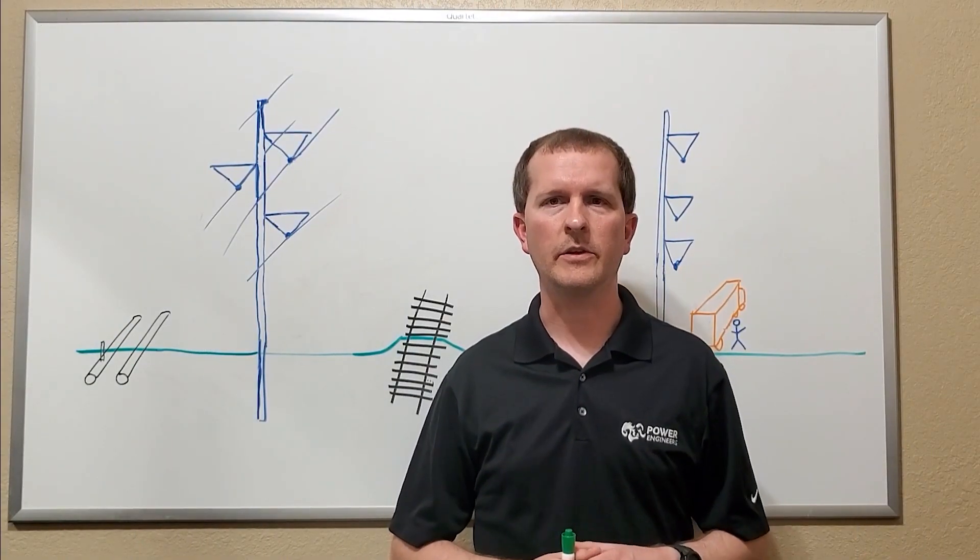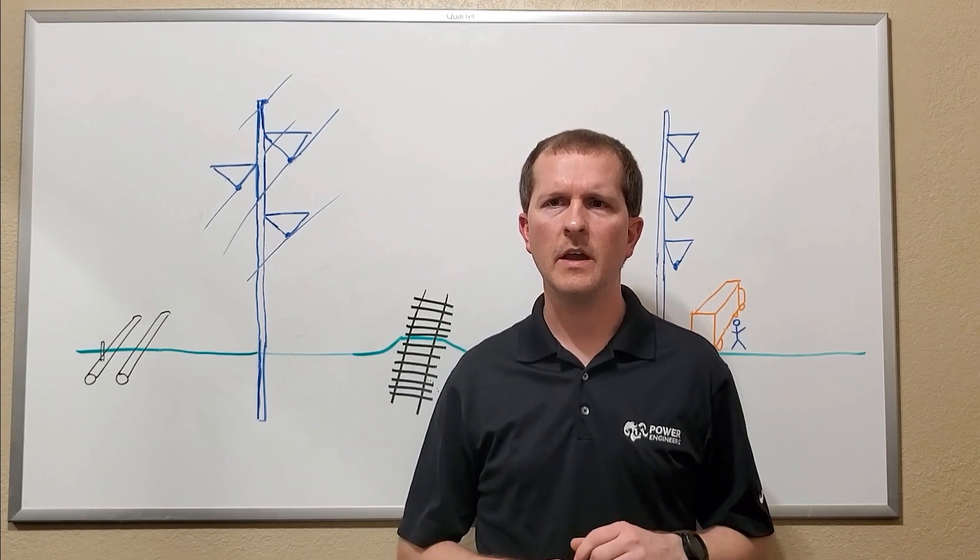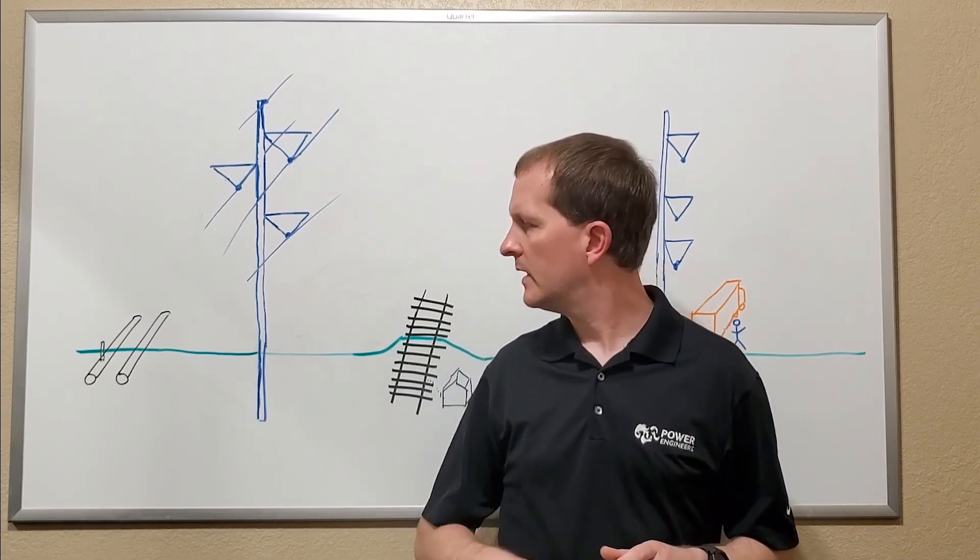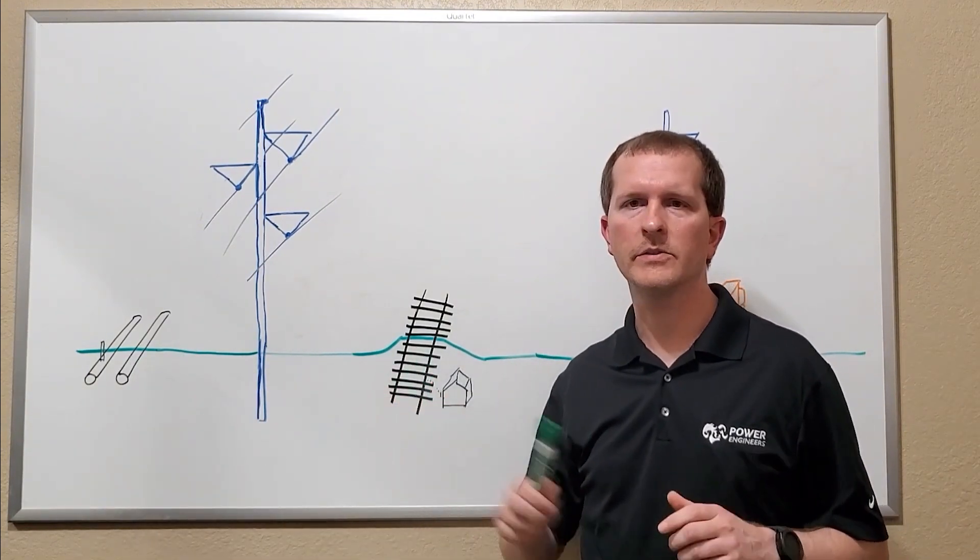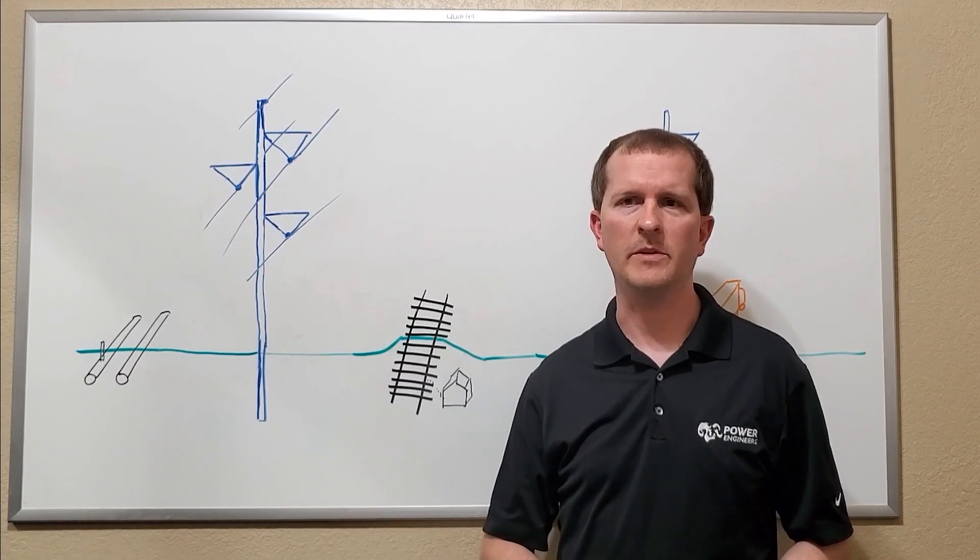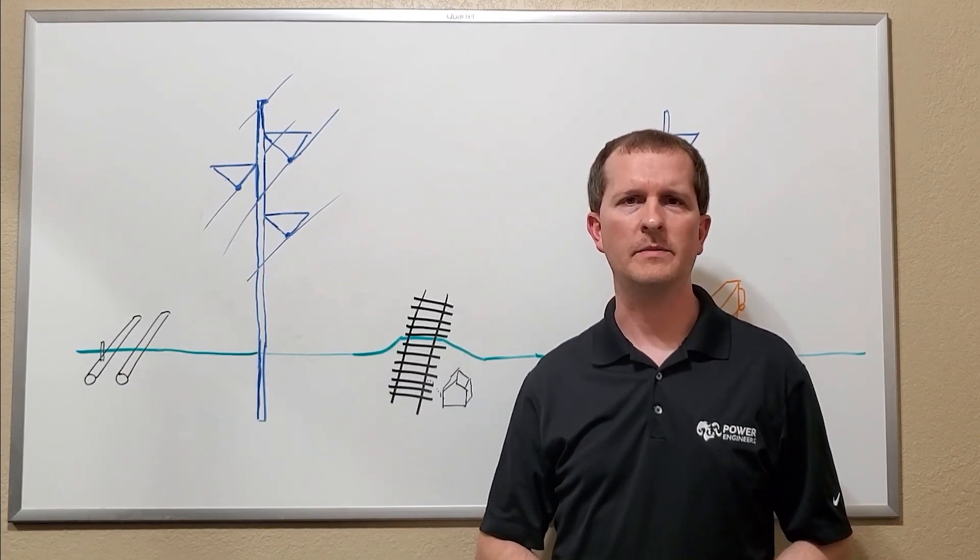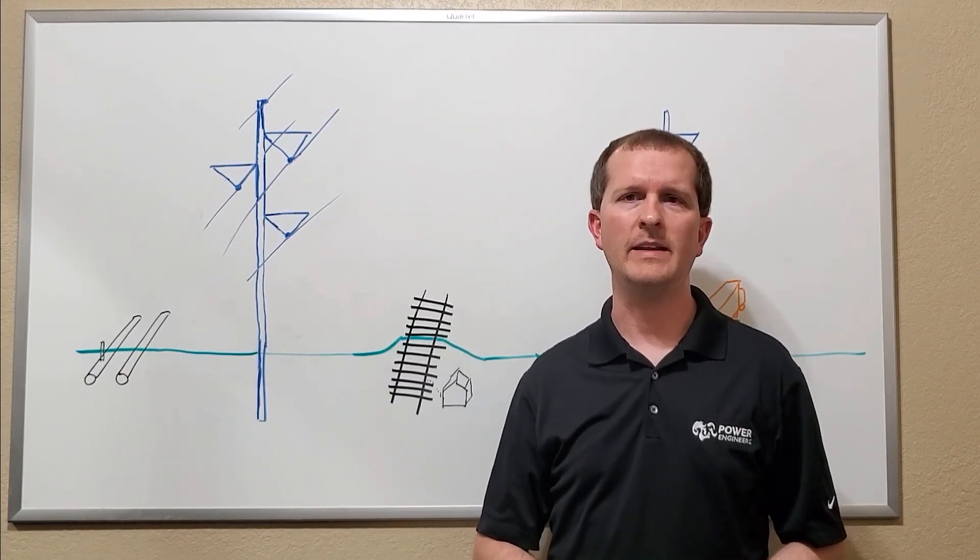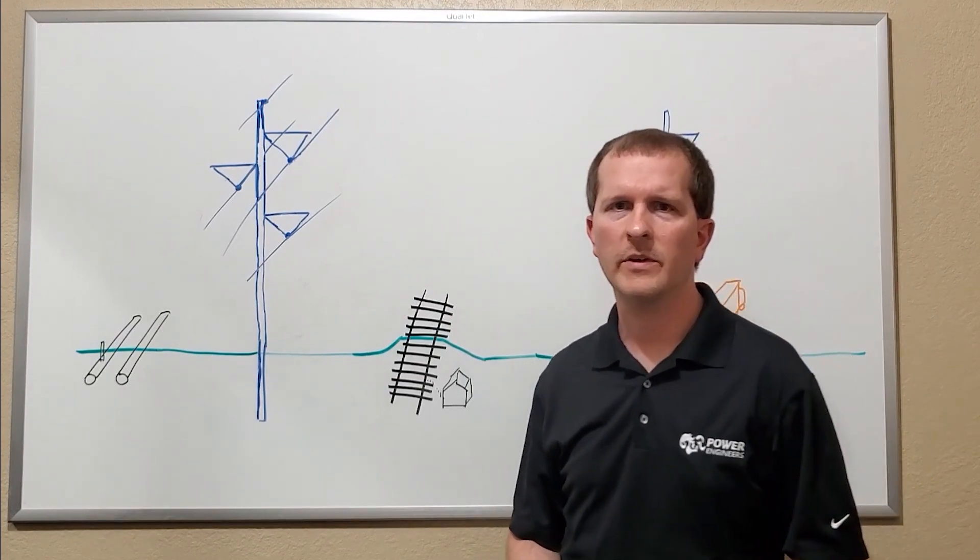Many transmission line projects are encouraged to follow existing corridors, often paralleling other infrastructure, including pipelines and railroads. While this is preferred from a permitting perspective, and often from the public's viewpoint, it can create AC interference issues.